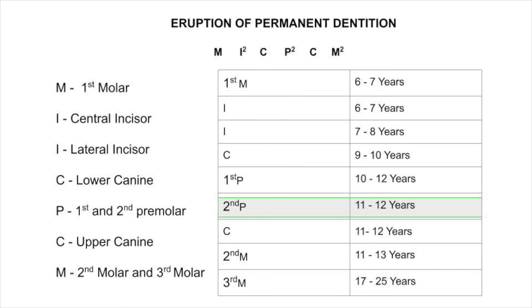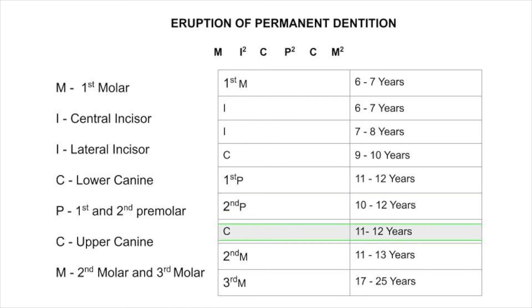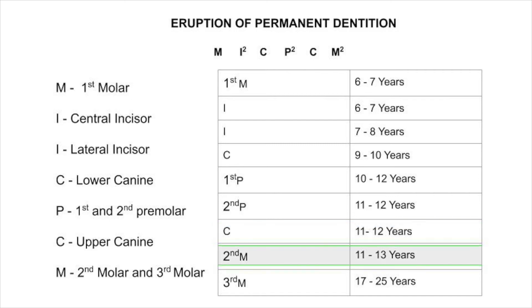The first premolar erupts during ten to twelve years, the second premolar erupts during eleven to twelve years, the upper canine erupts during eleven to twelve years, the second molar erupts during eleven to thirteen years, and the third molar erupts during seventeen to twenty-five years.